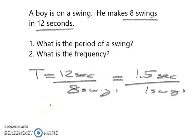The second part here is the frequency. The frequency is the number of repetitive motions, in this case swings, for every one second. So when we look at this, the frequency is going to be eight swings. So that's the thing that repeats itself. When you swing on a swing, you make the same motion over and over again, divided by 12 seconds.